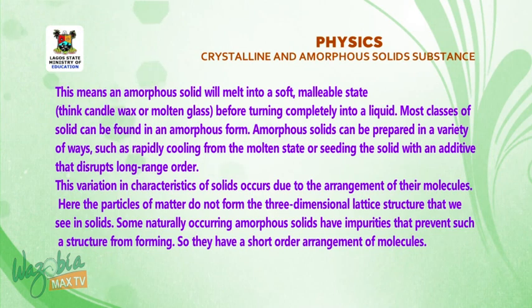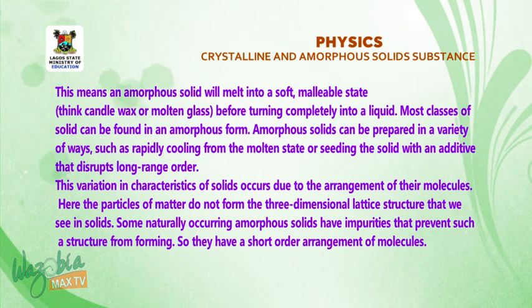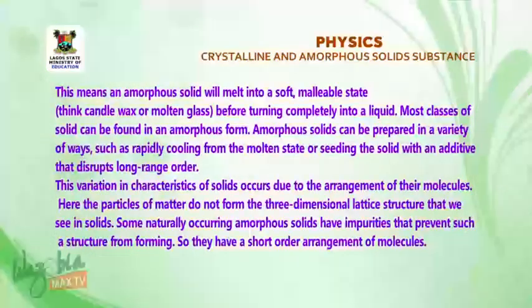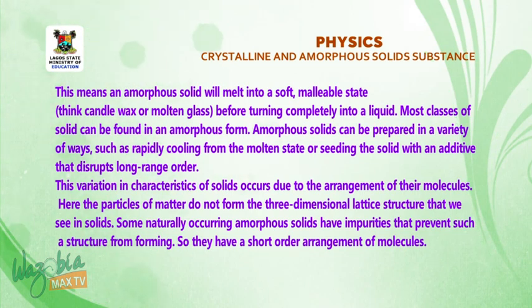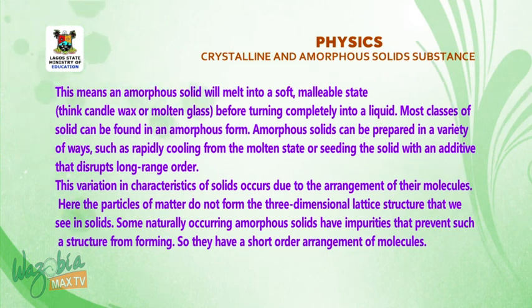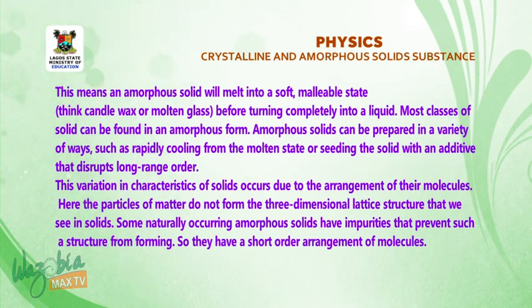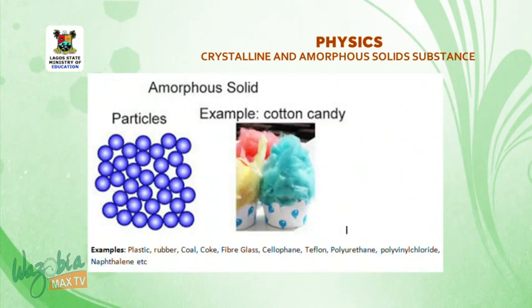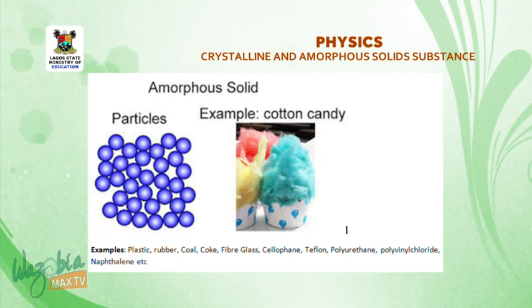Most classes of solid can be found in amorphous form. Amorphous solids can be prepared in a variety of ways, such as rapidly cooling from a molten state, or seeding a solid with an additive that disrupts long-range order. In amorphous solids, the particles of matter do not form the three-dimensional lattice seen in crystalline solids. Examples of amorphous solids include plastic, rubber, coal, coke, fiberglass, and cellophane.